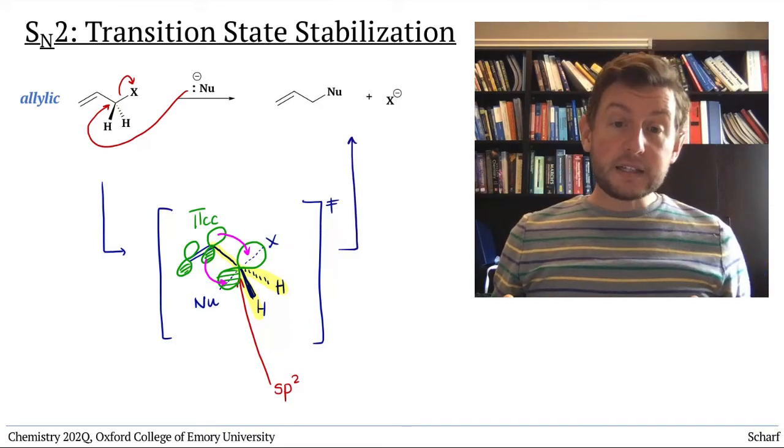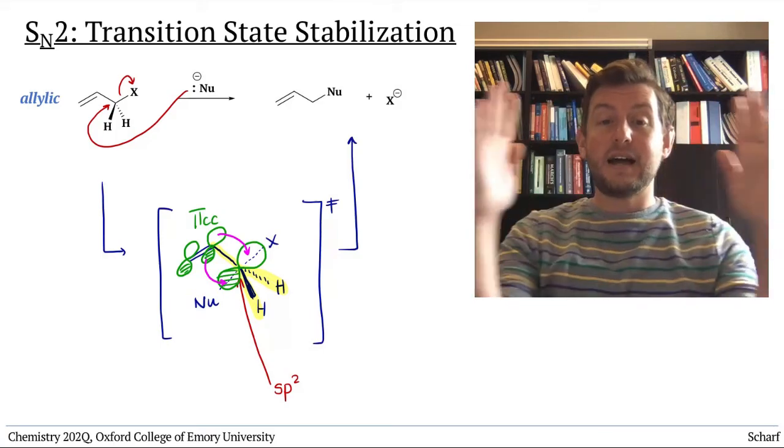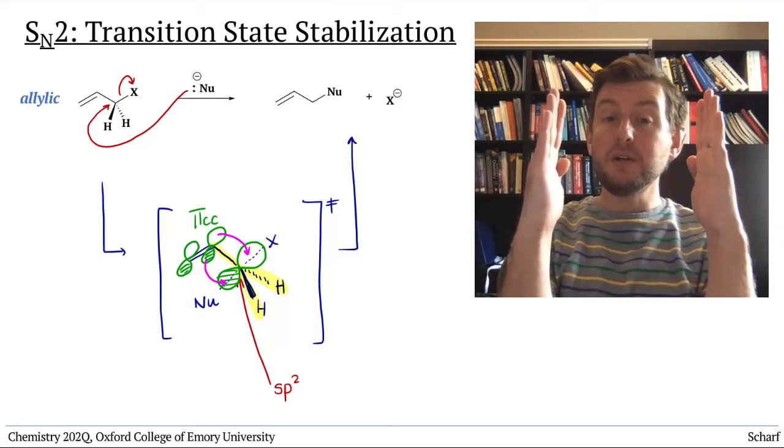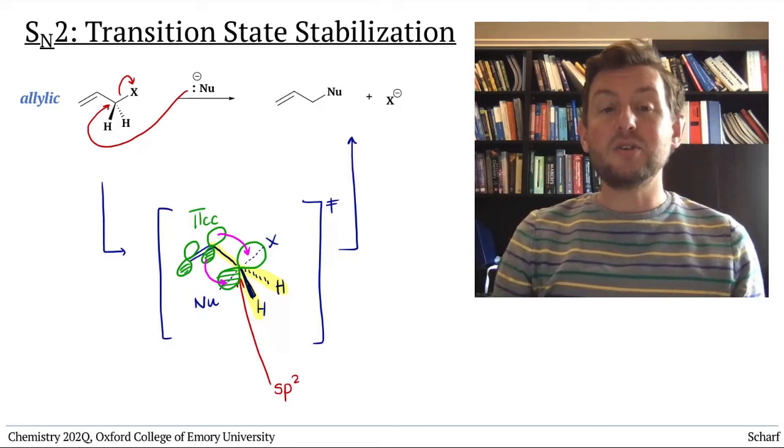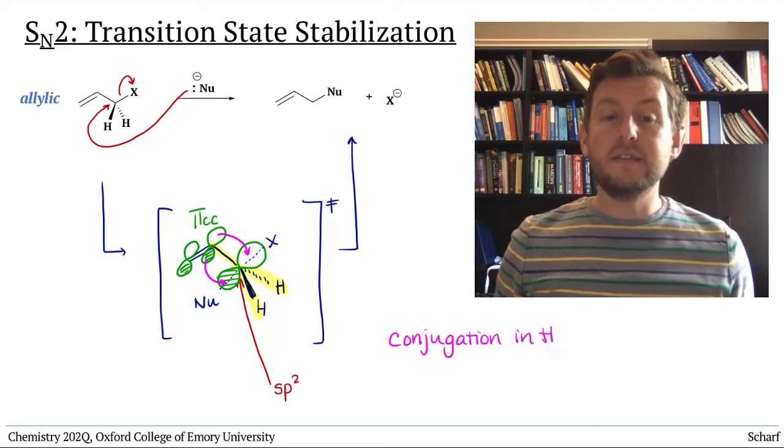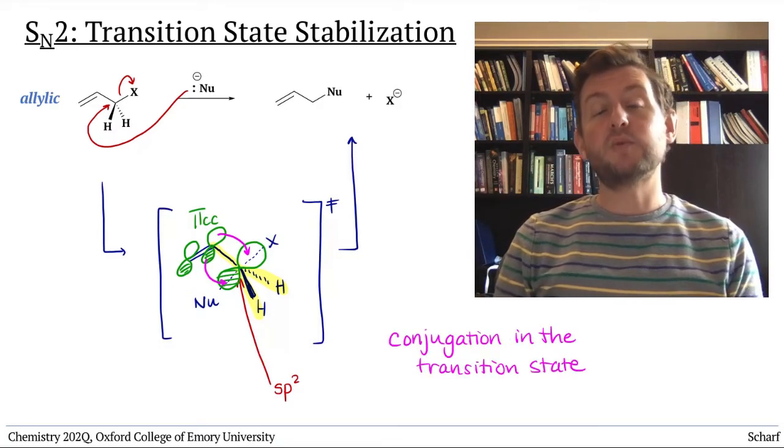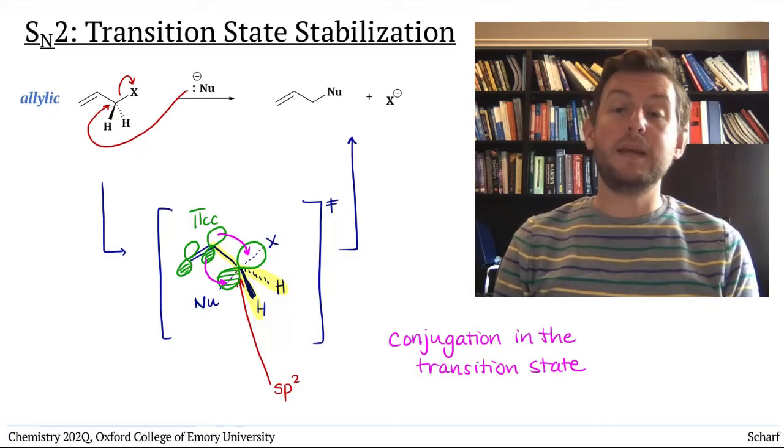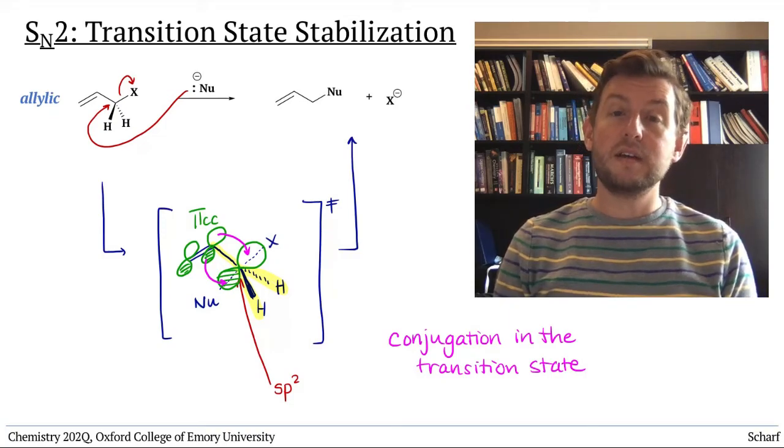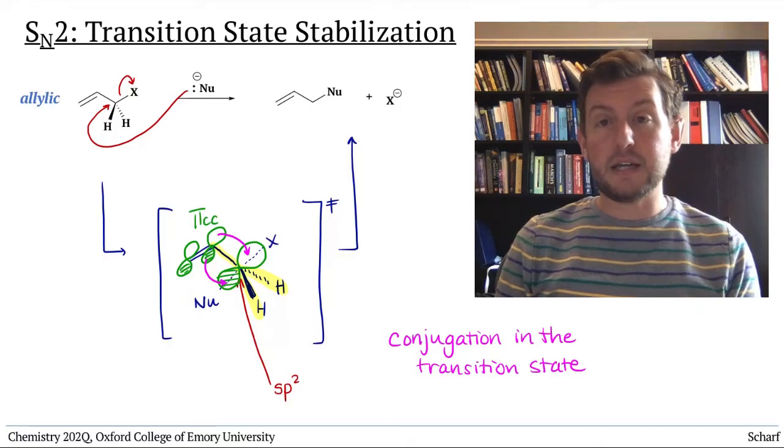This effect, the side-to-side overlap of p orbitals in a transition state, is called conjugation in the transition state, and is responsible for the especially rapid SN2 reactions of allylic and benzylic leaving groups.